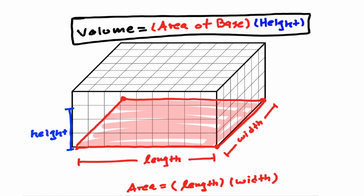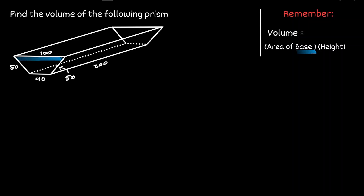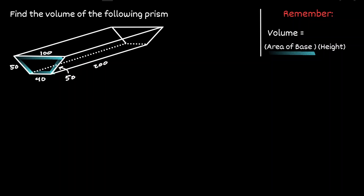So let's take a look at one example. We're going to find the volume of the prism given below. We have just defined the volume of a prism as the area of the base times the height. You can think of the base as the figure that we keep stacking to obtain the prism. Notice that in this figure, this trapezoid seems to be the figure that we keep stacking, at a height of 200 centimeters. So let's concentrate on finding the area of the base of this trapezoid.